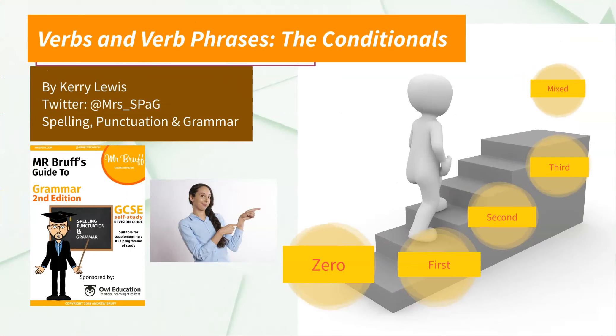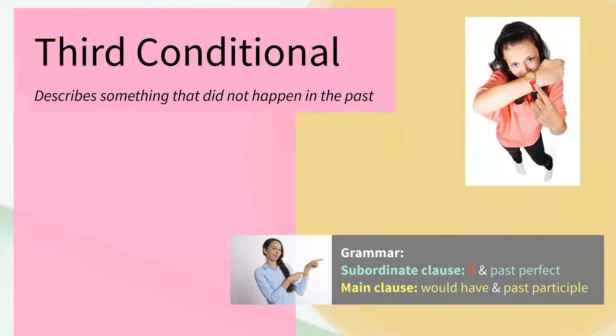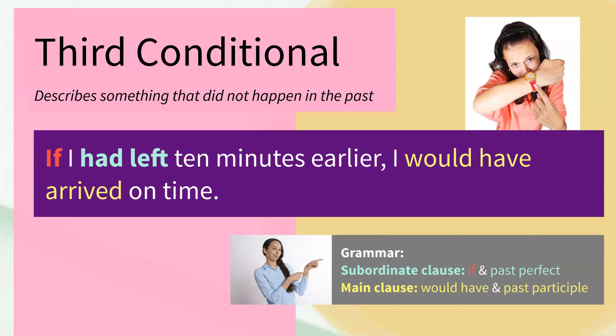Now let's look at the third conditional. The third conditional is really interesting because it describes something that did not happen in the past. 'If I had left ten minutes earlier, I would have arrived on time.' Did I leave ten minutes earlier? No. So did I arrive on time? No. This sentence talks about something that did not happen. You could also replace the word 'would' here with 'could,' 'might,' or 'may.'